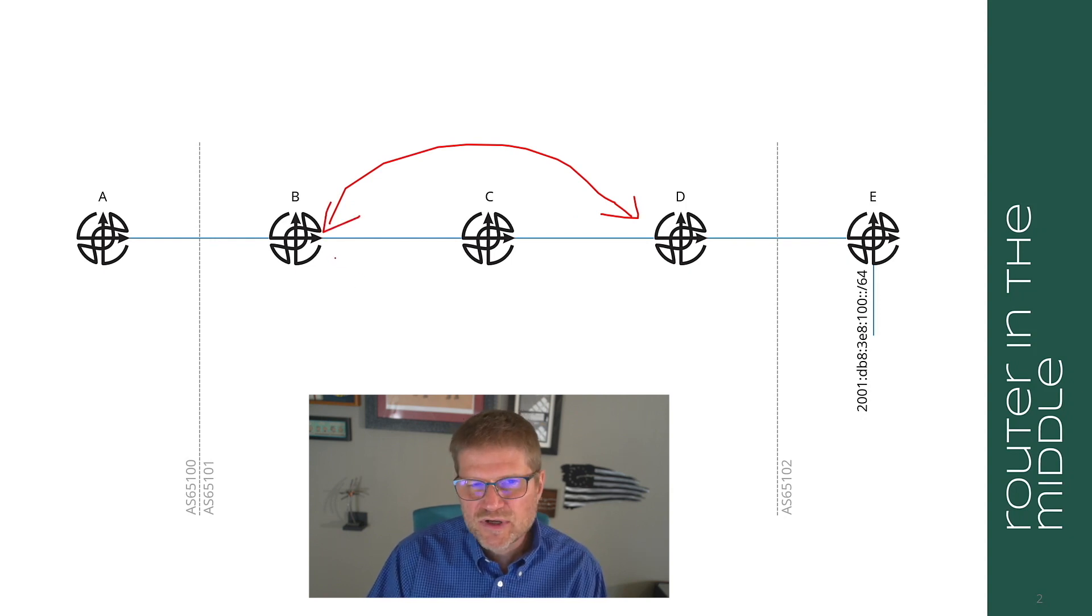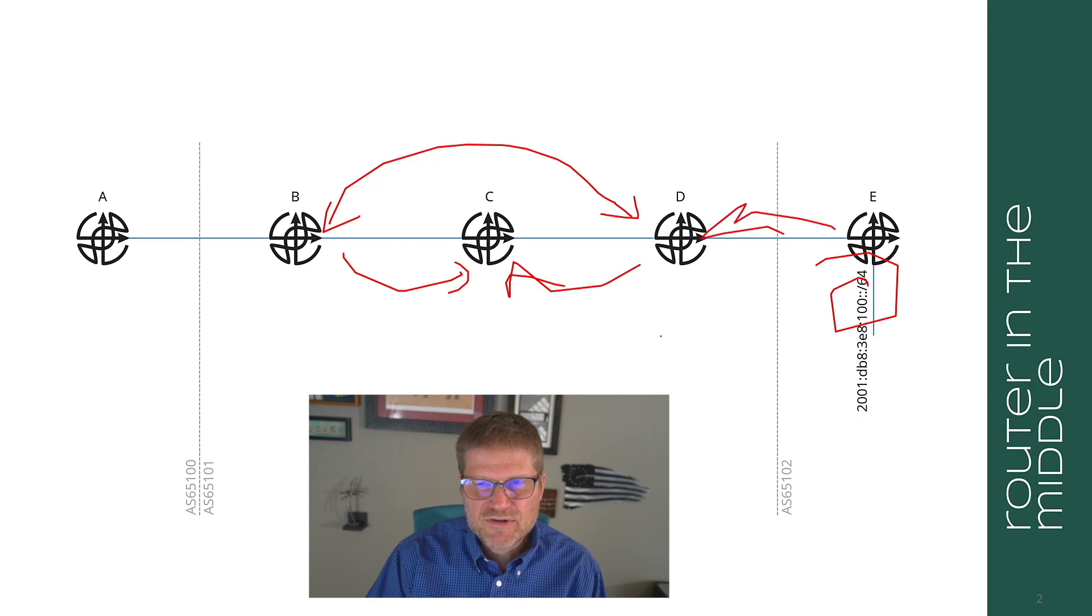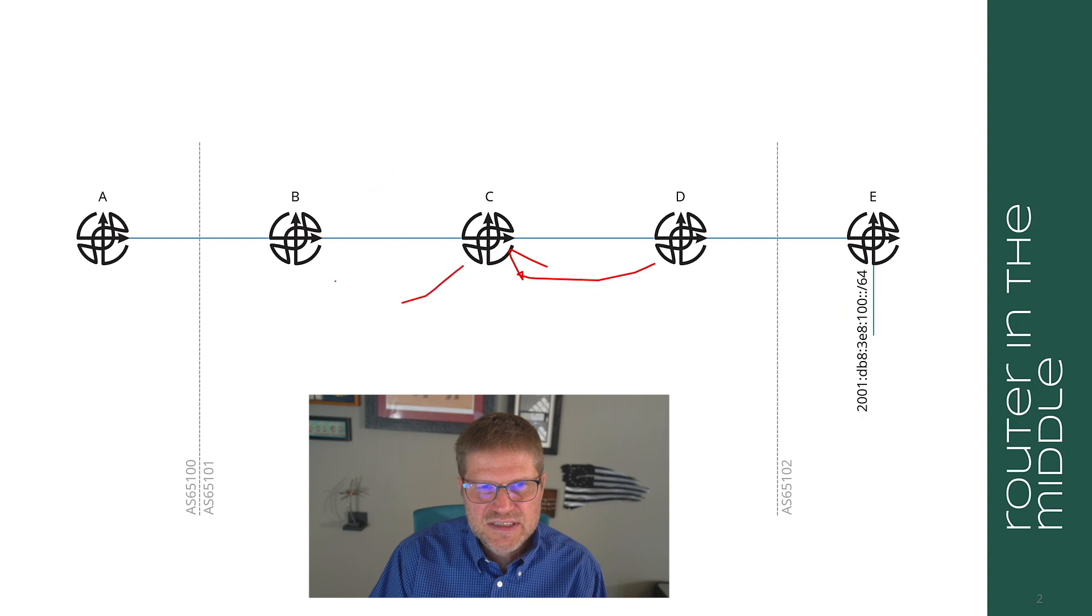Because remember according to the IBGP rules, B advertises a route from D to C. This 100::/64 route is advertised EBGP to D and then IBGP to C.